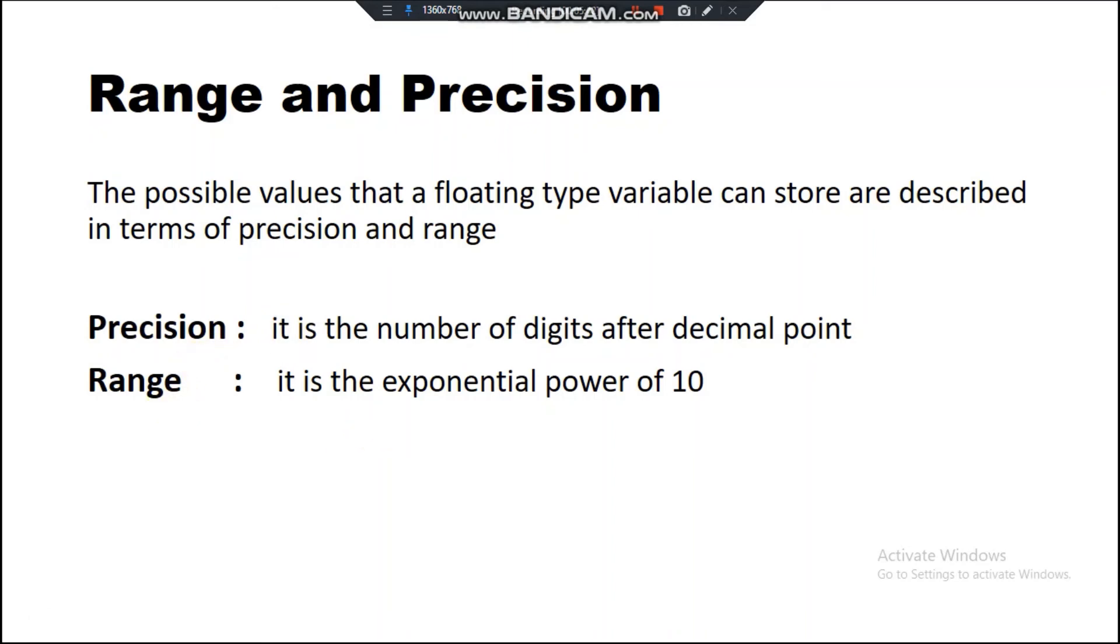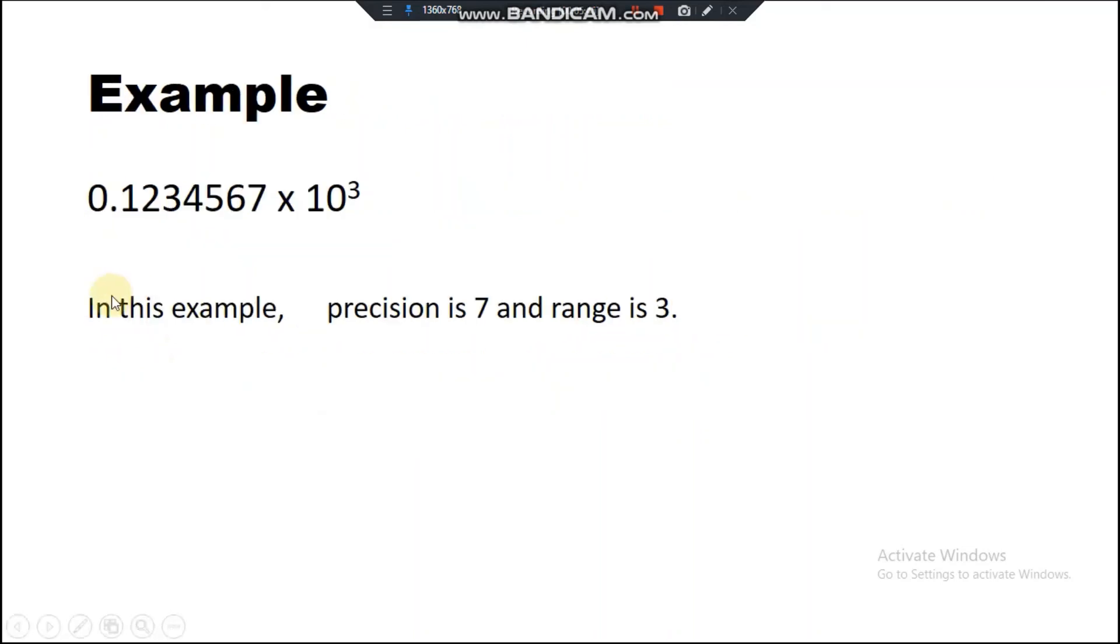The power of 10 that you write after e is called range. For example, we have this number 0.1234567 multiply by 10 raise to power 3. After the decimal point, you can see seven digits, so in this example precision is 7 and the power is 3.